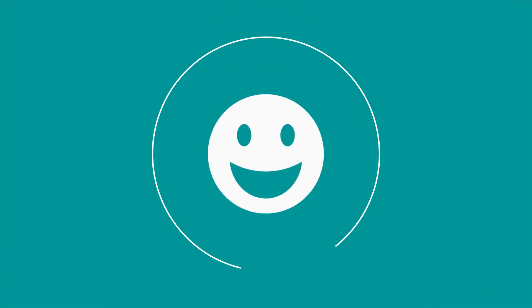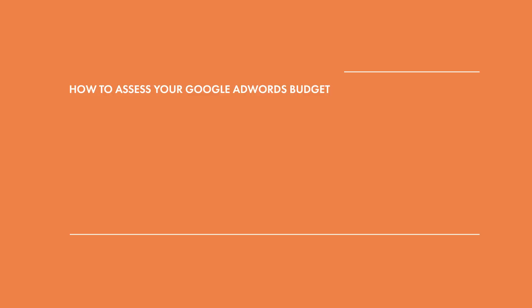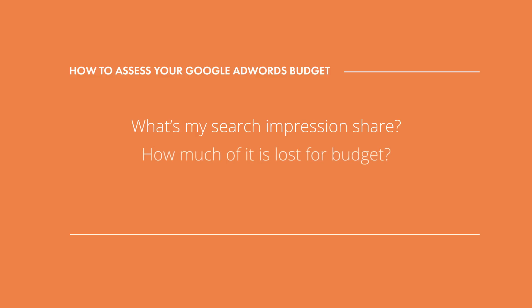Let's take an example of a couple of situations we see very often when re-evaluating your budget. First, you've launched a campaign. You're happy with some of the conversions, but you want more. The number one thing you should be asking — either your internal team or your agency — is: what's my search impression share? How much of it is lost for budget, and how much is it lost to rank? If you're losing it to rank, that's usually something that's somewhat in your control, and you can increase it by creating more focused, more relevant, and better campaigns.